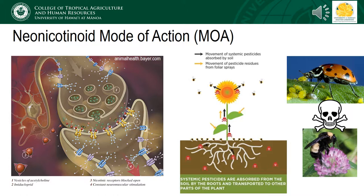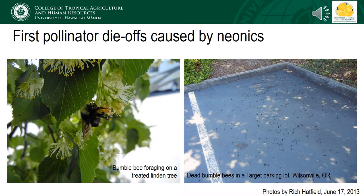These insecticides were developed to be systemic, meaning the insecticide doesn't sit on the outside of the plant leaves, but rather is taken up and circulated inside the plant. This makes them particularly effective against historically difficult to control pests, such as piercing and sucking insects like aphids, as well as some leaf-chewing insects. However, being systemic, they reach parts of the plant other than the leaves and can actually concentrate in the pollen, which is consumed by beneficial insects.